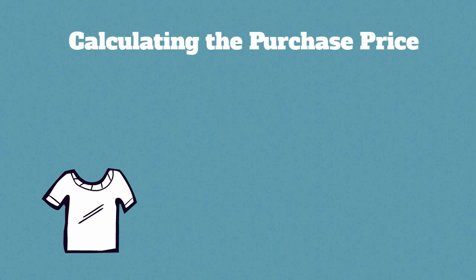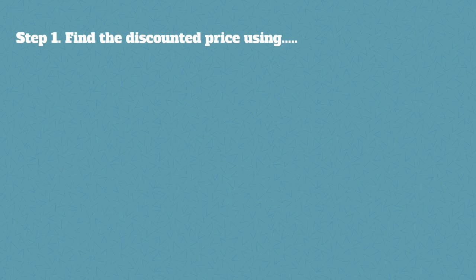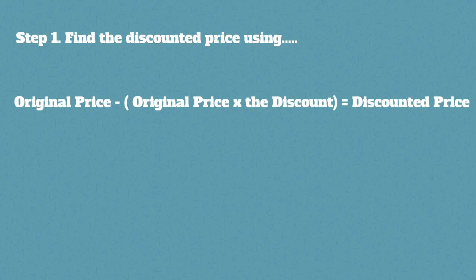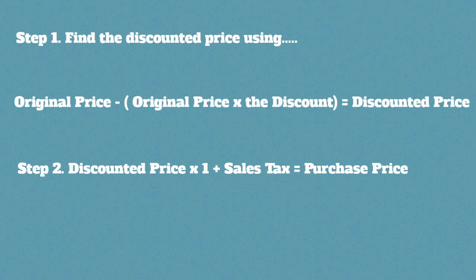Calculating the purchase price is a two step process. Step 1: Find the discounted price using the original price minus the original price times the discount equals the discounted price. Step 2: Take the discounted price times 1 plus the sales tax equals the purchase price.